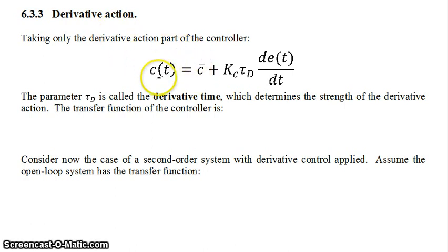If we take a look at just the derivative action part of the controller—of course you would never use a derivative-only system—but if we take a look at just this part of the derivative control, what we see here is that you have this parameter tau d, which is called the derivative time, and this determines the strength of the derivative action. The larger tau d is, the more derivative action you have in the controller.